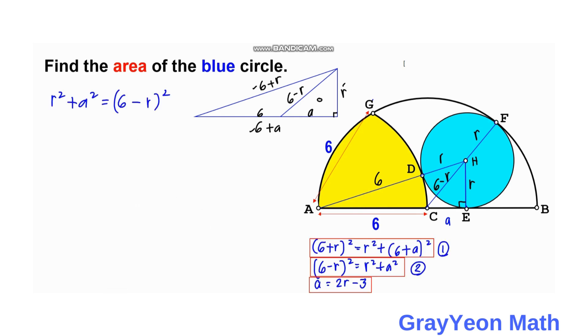Okay, so now that we have already known the value of A in terms of R, we can substitute this in the second equation. So R squared plus A, which is 2R minus 3, squared is equal to 6 minus R squared.